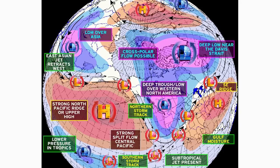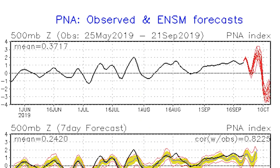We're about to see a negative NAO take place, but we're going to have a big-time negative PNA, and that's going to affect our entire pattern for the next little while. Looking at the current PNA observed and the forecast from the National Weather Service and their models, we're in a positive PNA right now, but this looks to go back neutral, then pop back very positive, and then go very negative around the 10th of October. Keep in mind that is very far out and things are subject to change.